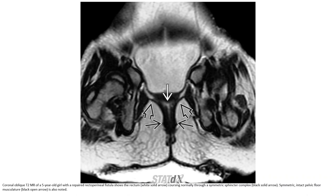Coronal oblique MRI in a five-year-old girl with a repaired rectoperineal fistula shows the rectum coursing normally through a symmetric sphincter complex. A symmetric, intact pelvic floor musculature is also noted.